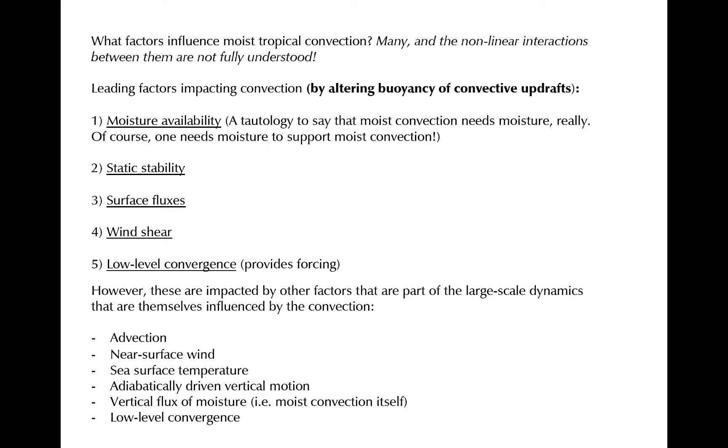Several factors work jointly to impact the growth of tropical convection. A few are listed here. Perhaps the most important factor is the availability of moisture, especially outside of the atmospheric boundary layer and below the zero degrees C level. A dry atmosphere prevents the growth of convection via entrainment. Static stability and surface fluxes of energy are other thermodynamic factors that affect the buoyancy of updrafts in moist convection. Wind shear and low-level convergence are dynamic factors that impact convection.